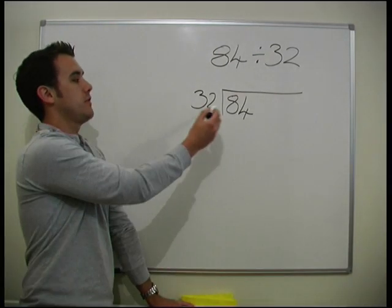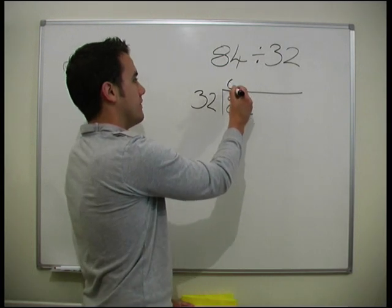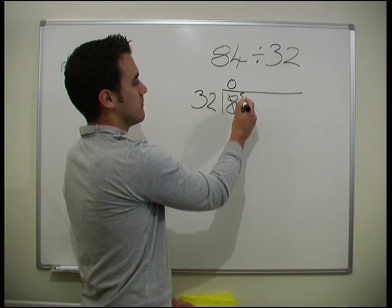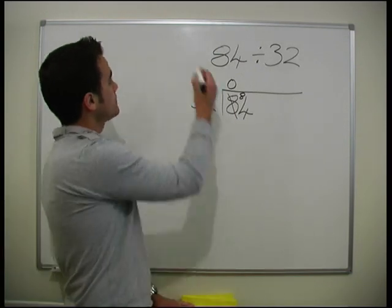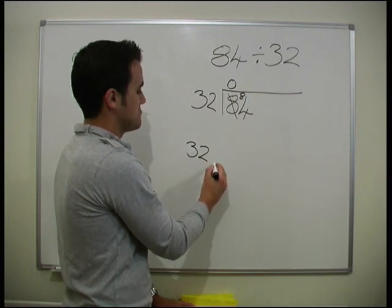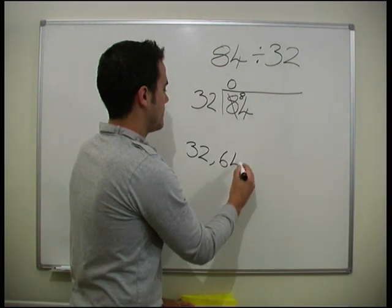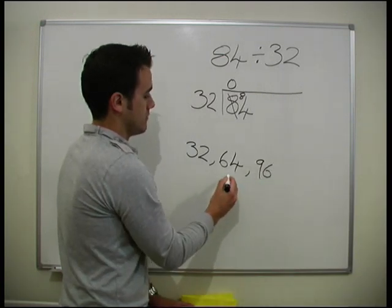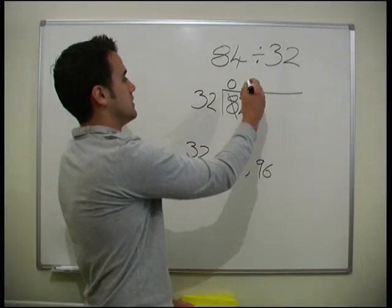Okay, first thing we do: how many 32s go into 8? None. So we've got a 0 here. Now we carry the 8 over. So how many 32s go into 84? Let's write down here — 2 × 32 is 64, and another 32 on gives 96. So 2 32s fit into 84, and we put a 2 here.